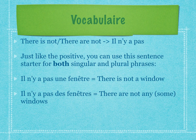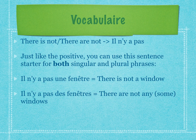To say 'there is not' or 'there are not,' we're going to take that 'ne pas' phrase and add it to our 'il y a.' The only difference we're going to do this time is the 'ne,' instead of going in front of the 'a,' which is our verb, we're going to put it in front of the 'y' instead.